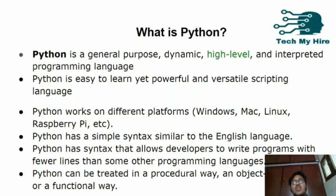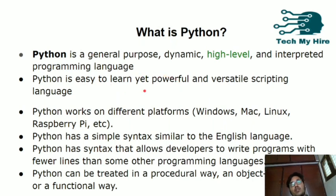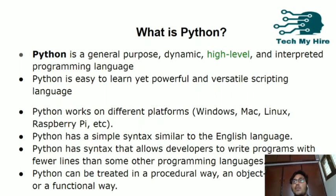Python is easy to use, powerful, and versatile scripting language. It is very powerful because it has a huge set of libraries — that is the reason why it is getting very popular. Due to this huge set of libraries and fewer lines of code we write, that is the reason why Python is becoming more popular.